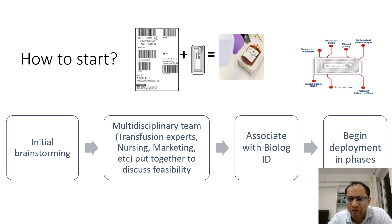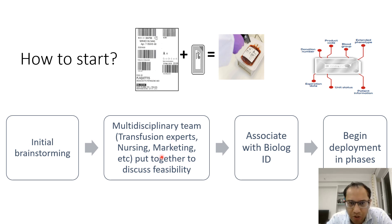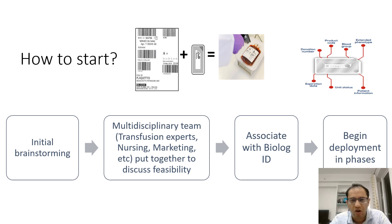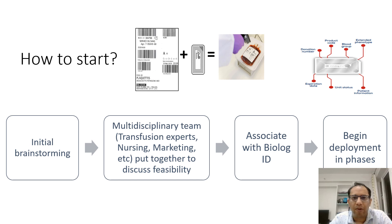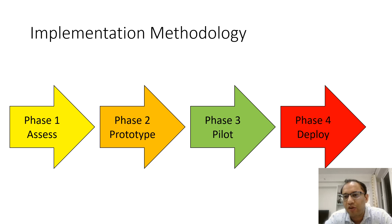When trying to implement RFID, it involves a few stages. Basically, you start with an initial brainstorming where your multidisciplinary team comes together — transfusion medicine experts, nursing, marketing, quality, and medical doctors — to discuss feasibility at your center. Then you associate with the company in phases: deploy in one ward or high-throughput unit first, then gradually upscale to other areas. The implementation methodology has four phases: Phase 1 is assess, Phase 2 is prototype, Phase 3 is a pilot run, and Phase 4 is full deployment.